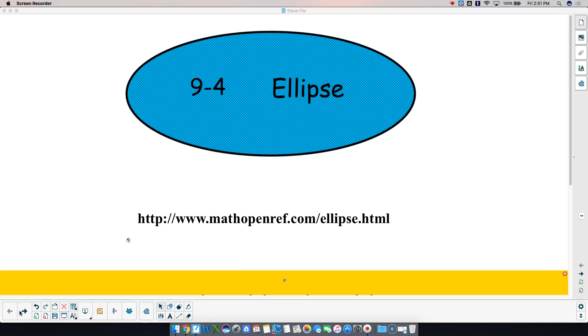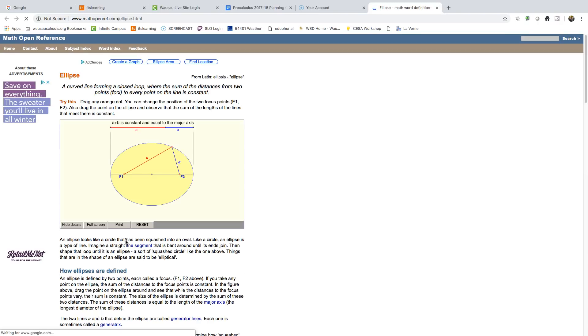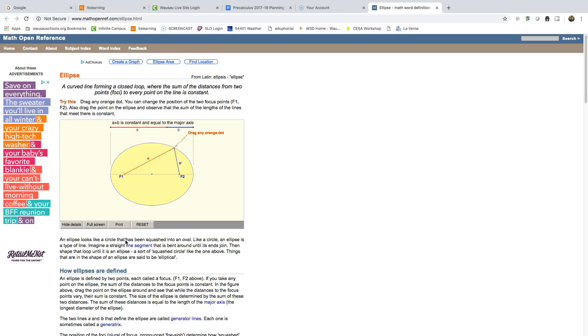Now, what an ellipse is, is it is the... now let's see if this fires up, come on now, here we go, there it goes, okay. An ellipse is a curved line forming a closed loop where the sum of the distances from two points, we call those two points the foci, to every point on the line is constant.